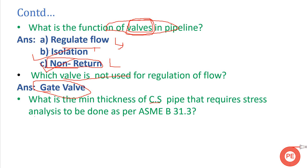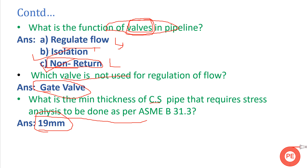What is the minimum thickness of a carbon steel pipe that requires stress analysis as per ASME B31.3? The minimum thickness is 19 mm. Any line with at least 19 mm wall thickness as per ASME B31.3 will be stress-analyzed using stress analysis software.